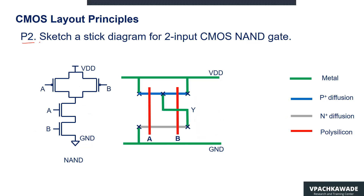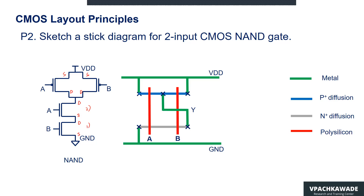Let's have a look at problem number two, where we use the stick diagram to draw the layout for the two-input CMOS NAND gate. We have two inputs for the CMOS NAND gate — NMOS switches are connected in series and PMOS switches are connected in parallel. The drain and source of the NMOS transistors are marked. The sources of the PMOS switches are tied to VDD and the drains are connected to the drain of the upper NMOS. Once we have this notation, we can move to draw the layout.